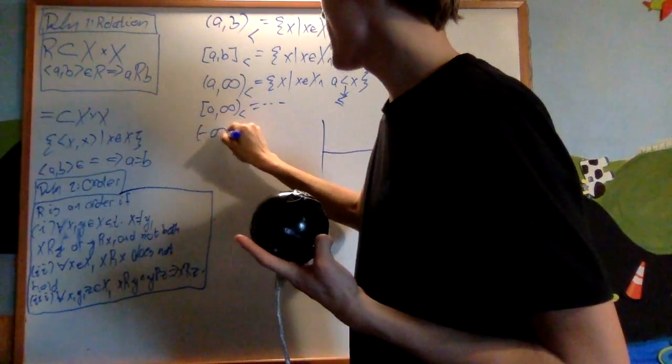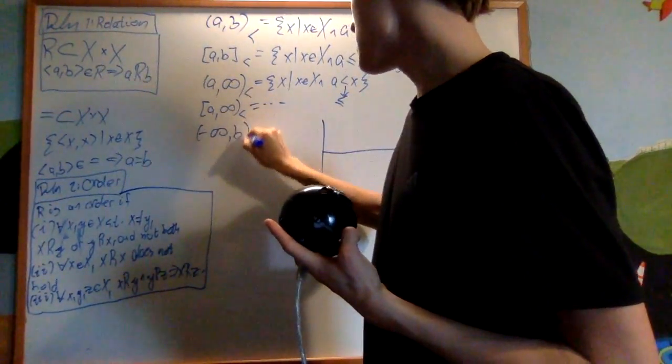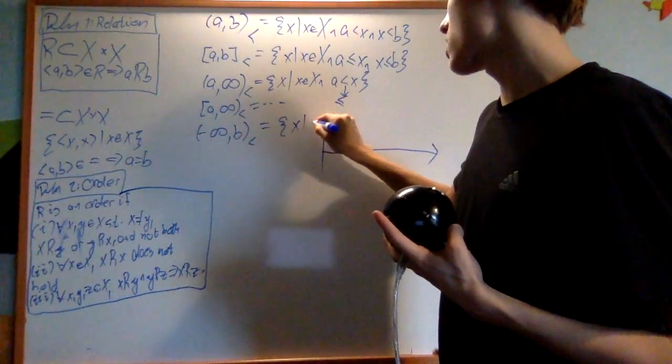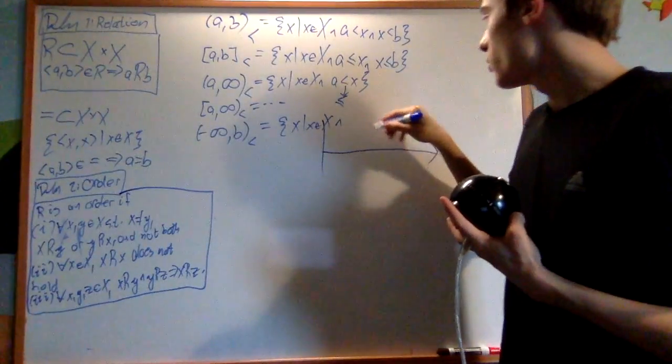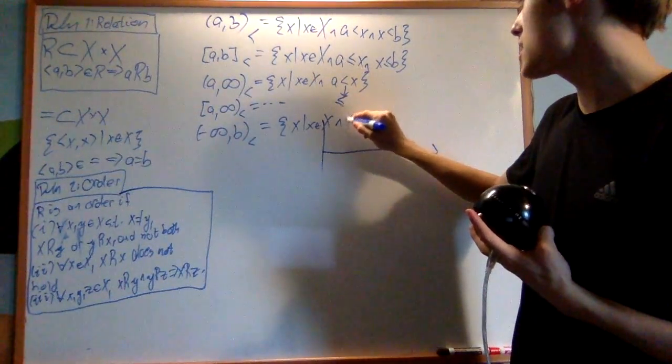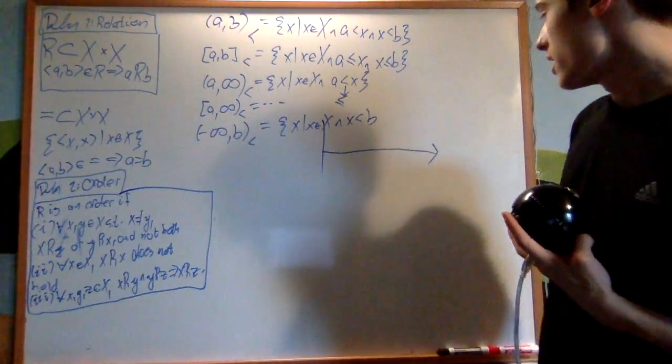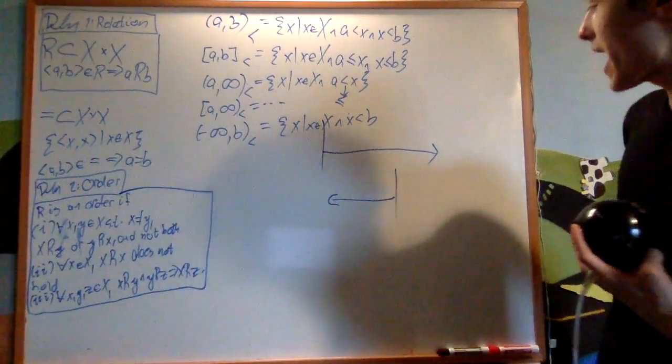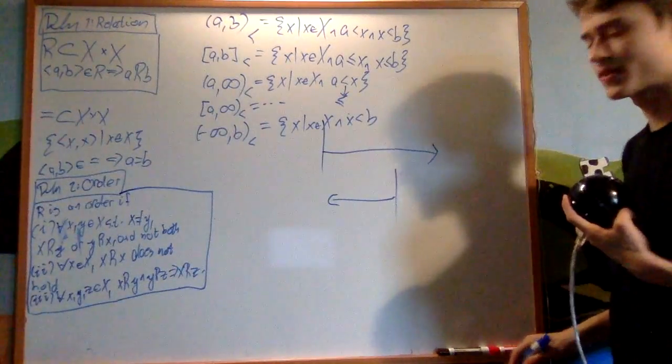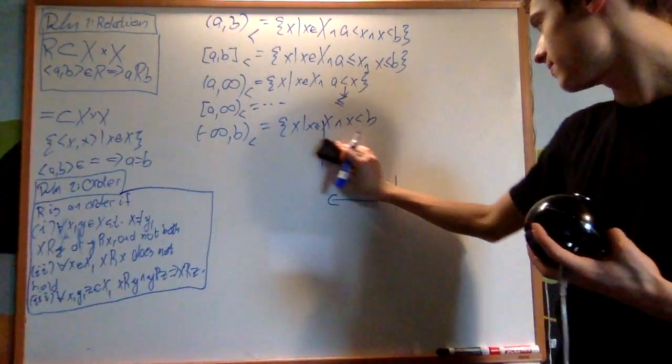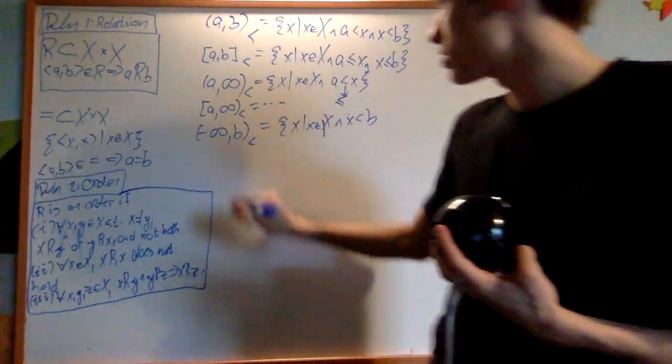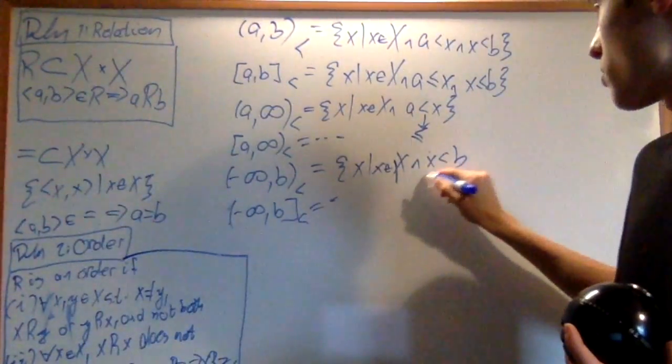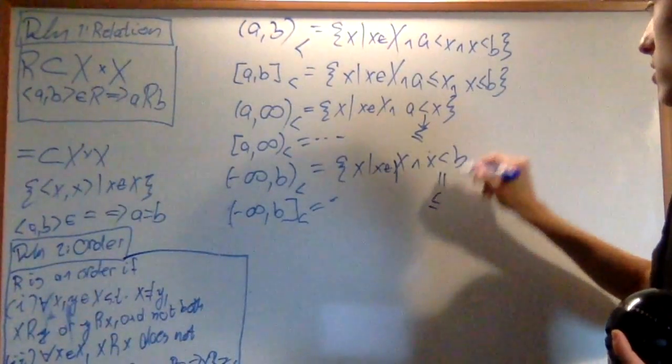And then we can also have a minus infinity to b open interval, which is the set of x such that x is in X and we have that x is less than b. So this is the exact opposite. We have some upper bound and we go as far back as the set allows us. And then similarly, we can also have a closed interval to b, where we just replace that less than with less than or equal to.